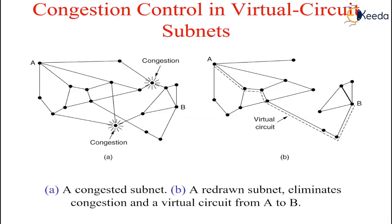Another strategy relating to virtual circuits is to negotiate an agreement between the host and subnet when the virtual circuit is set up. This agreement normally specifies the volume and shape of the traffic, quality of service required, and other parameters. To keep its part of the agreement, the subnet will typically reserve resources along the path when the circuit is set up. These resources can include table and buffer space in the routers and bandwidth on the lines. In this way, congestion is unlikely to occur on the new virtual circuit because all the necessary resources are guaranteed to be available. This kind of reservation can be done all the time as standard operating procedure, or only when the subnet is congested. A disadvantage of doing it all the time is that it tends to waste resources.